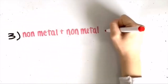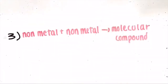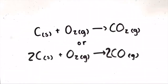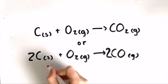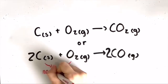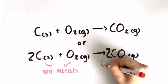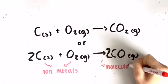Thirdly, two non-metals combine to form a molecular compound. For example, carbon plus oxygen yields carbon dioxide, and carbon plus oxygen yields carbon monoxide. They are both non-metals, and carbon is multivalent, so they form molecular compounds.